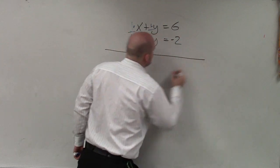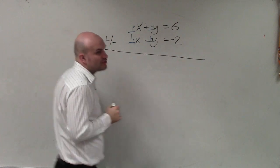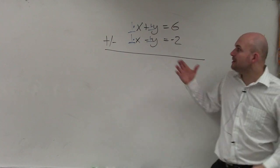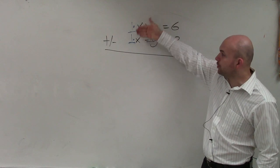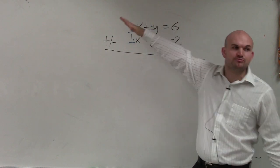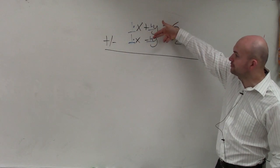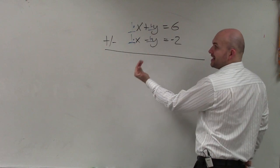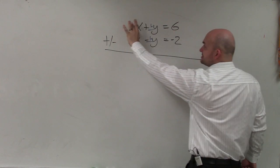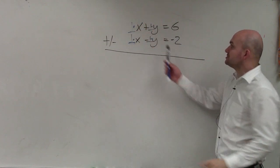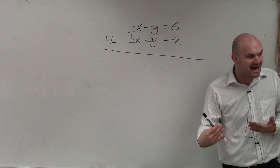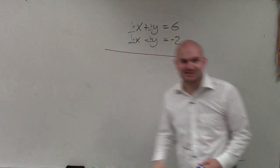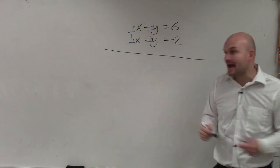To apply elimination, basically what we're going to do is add or subtract the two equations. When you have the same number and they're both positive, you're typically going to want to subtract the two equations. When you have the same number and one's positive and one's negative, you're going to want to add the two equations. What's interesting about this system is that the x coefficients are the same sign, and for the y's, one's positive and one's negative. So I can add or subtract the two equations to solve. I'll start with the easy one and give you the more difficult one to try.